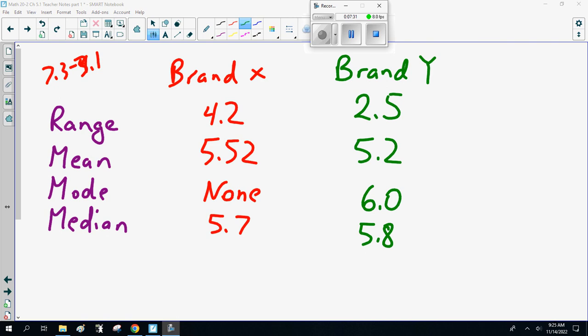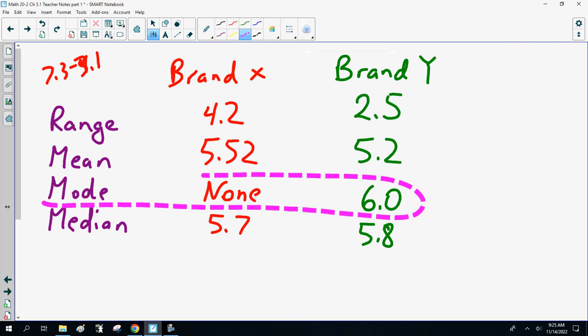Welcome back. When I did the calculations, I got a range of 2.5, a mean of 5.2, the mode is 6.0. There's actually two sixes in there. And the median is 5.8. Now, a few things here. Note, is the mode useful? In this instance, no, there's not enough repeats. Sometimes it's helpful.